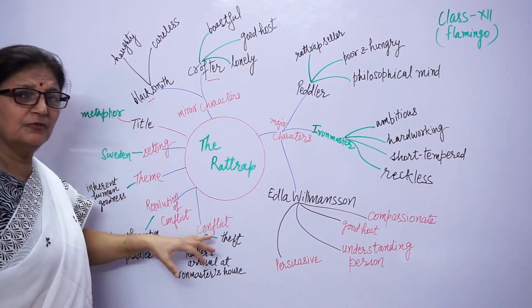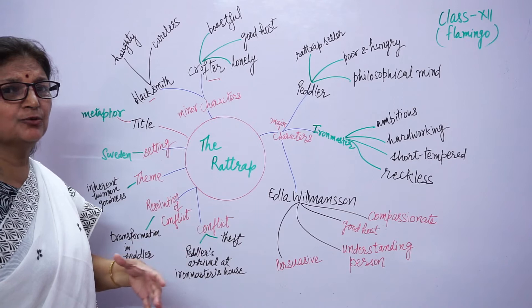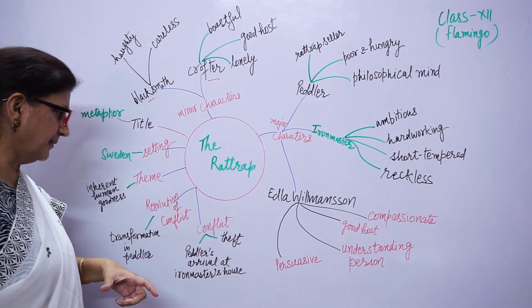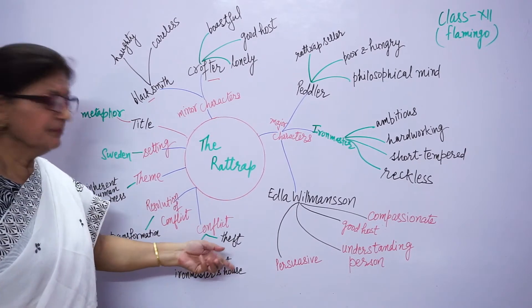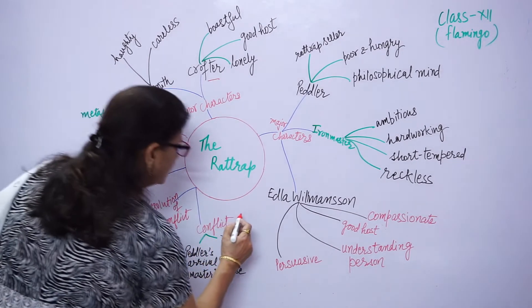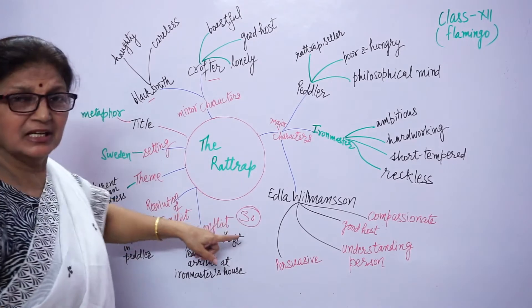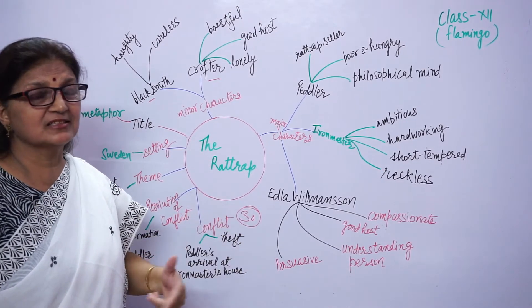There is conflict in every story. In every story you will see there is a conflict. Our story's conflict starts when peddler steals 30 kronor of the crofter. When he steals the crofter's 30 kronor, that's where the conflict starts.